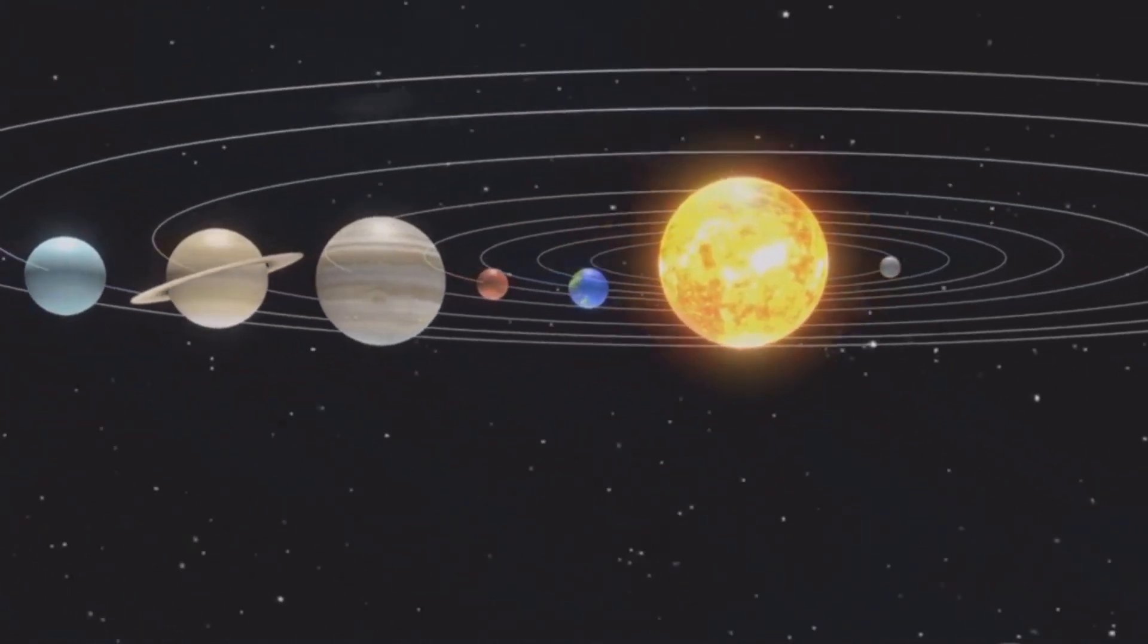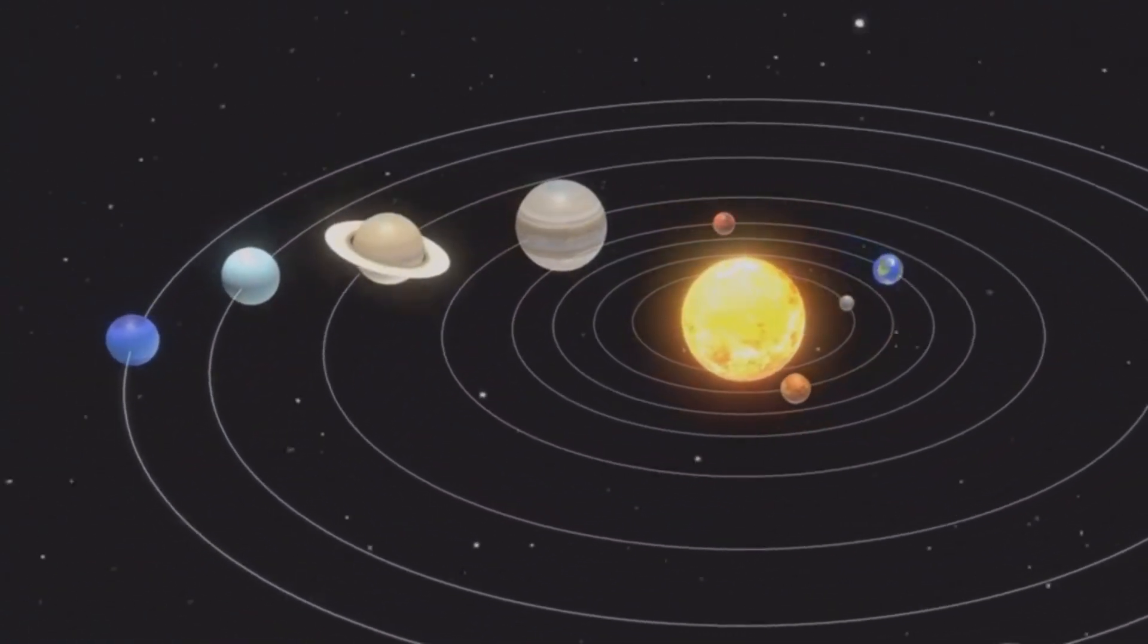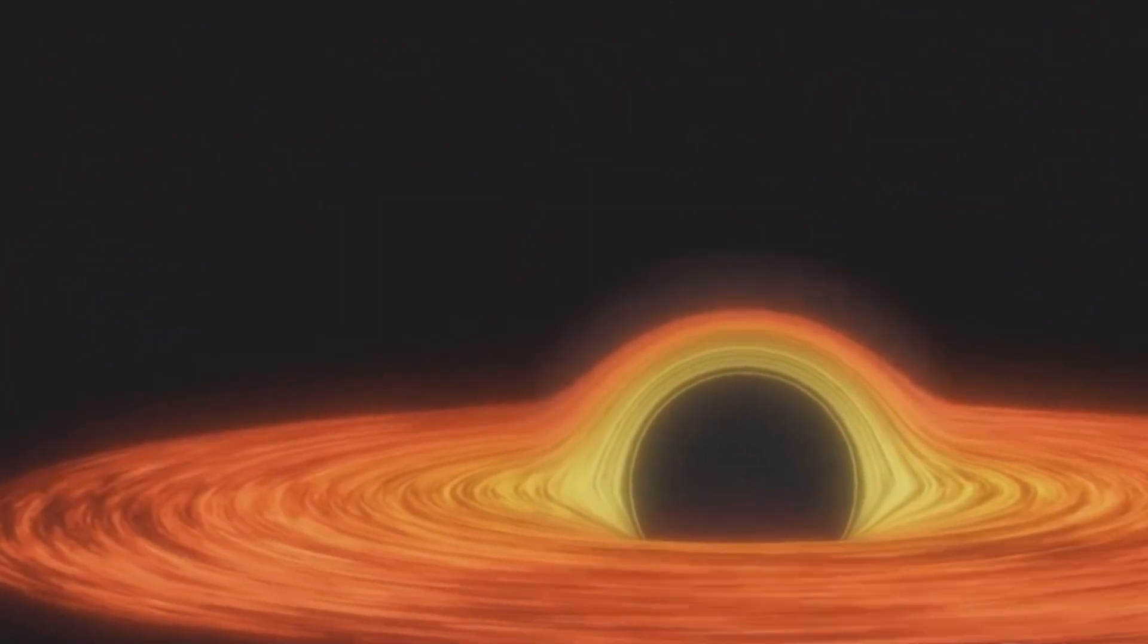Imagine our solar system, with all its planets and asteroids, contained within a region smaller than the orbit of Mercury. That's the kind of gravitational dominance we're talking about.